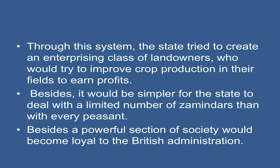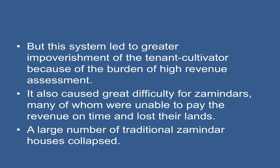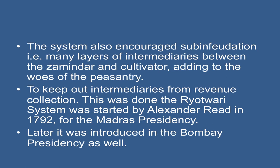Besides, it would be simpler for the state to deal with a limited number of zamindars than with every peasant, and a powerful section of society would become loyal to the British administration. But the system led to greater impoverishment of the tenant cultivator because of the burden of high revenue assessment. Many zamindars were unable to pay the revenue on time and lost their lands. The system also encouraged sub-infeudation, that is, many layers of intermediaries between the zamindar and the cultivator, adding to the woes of the peasantry.